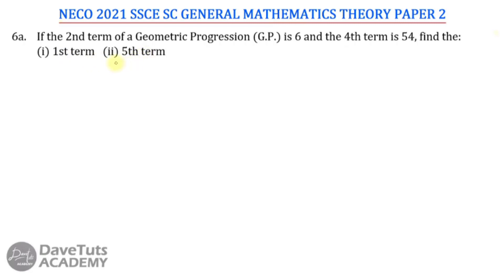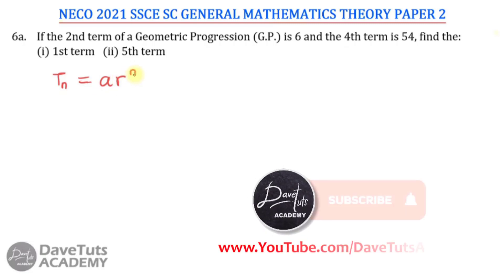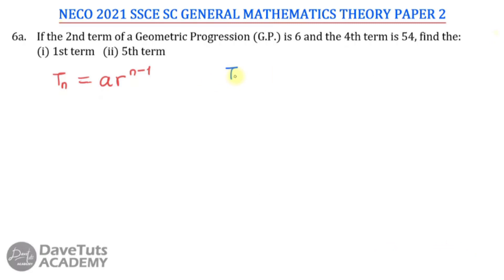As a recall of our understanding, the nth term of a geometric progression is given as the first term A multiplied by the common ratio raised to power n minus 1, where n is the number of terms. In this particular question, we're told that the second term T2 is 6 and the fourth term T4 is 54.